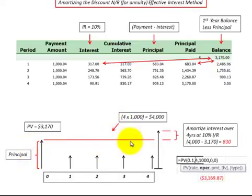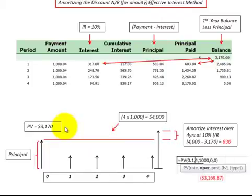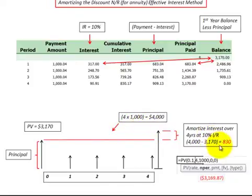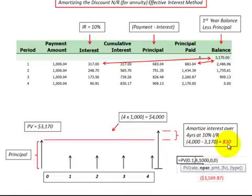We will receive four equal payments of $1,000 for a total amount of $4,000. We then subtract out our present value of those payments — $4,000 minus $3,170 — and we get interest revenue or expense that we have to amortize over that notes payable or receivable, which in this case would be $830.